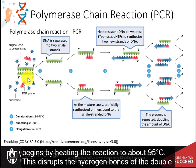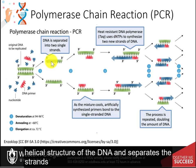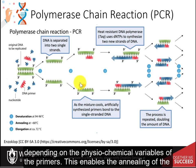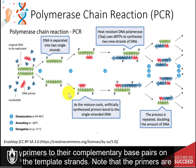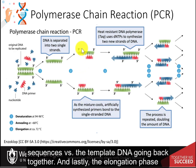Denaturation begins by heating the reaction to about 95 degrees Celsius. This disrupts the hydrogen bonds of the double helical structure of the DNA and separates the strands into single-stranded DNA. Next, the reaction is reduced to about 50 to 60 degrees Celsius, depending on the physiochemical variables of the primers. This enables the annealing of the primers to their complementary base pairs on the template strands. Note that the primers are added to the mixture in excess so that they will preferentially bind to their complementary sequences versus the template DNA going back together.